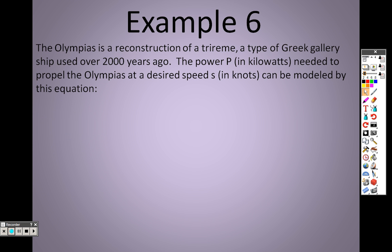So taking a look here now at Example 6, the Olympias is a reconstruction of a trireme, a type of Greek gallery ship used over 2,000 years ago. The power P in kilowatts needed to propel the Olympias at a desired speed in knots can be modeled by this equation.